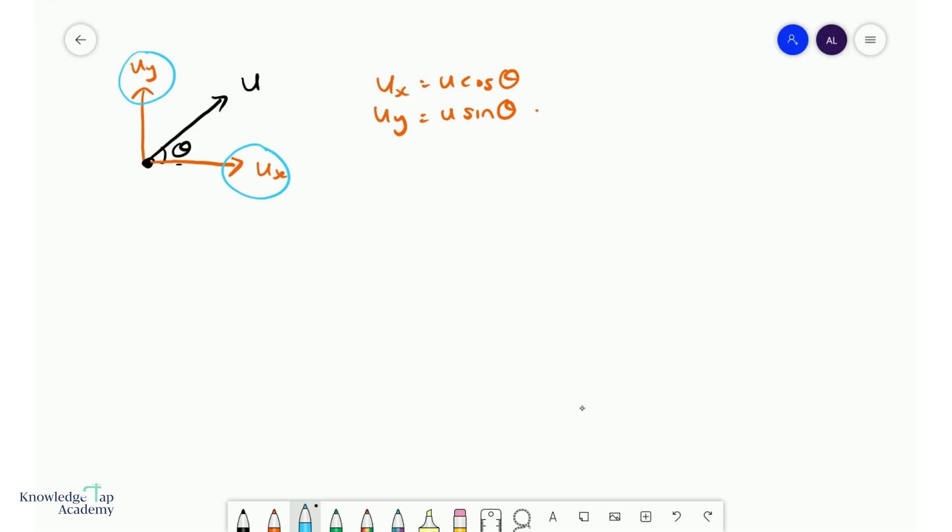And remember, the horizontal motion is essentially a constant velocity. And so the only equation that makes sense for something like that is distance or sx equals ux times time.